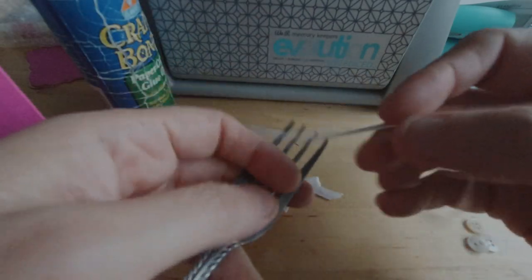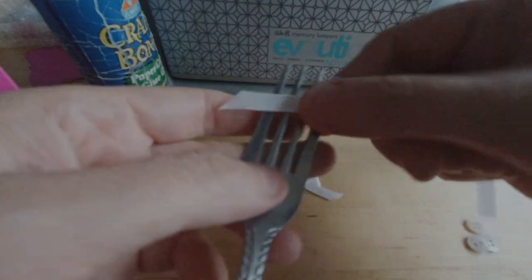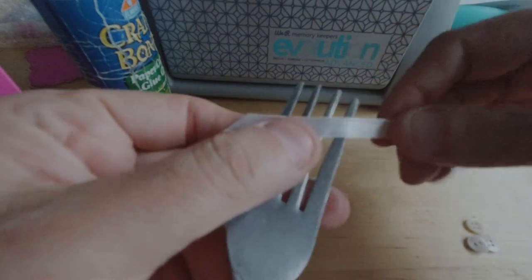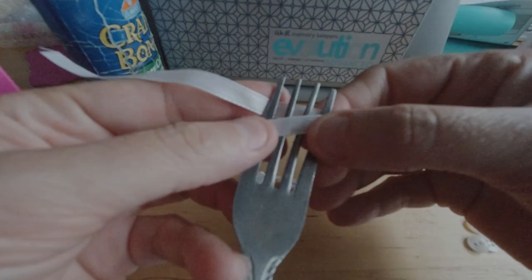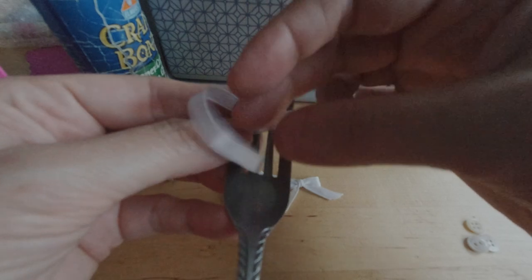So all you do is take your ribbon. I try to start with one end already cut to an angle. You start to the front of your fork, you go around, so you go all the way around the fork like that, and then you go down through the slot.